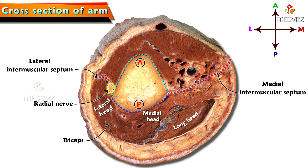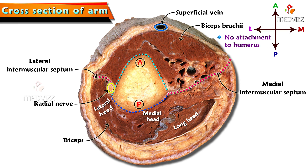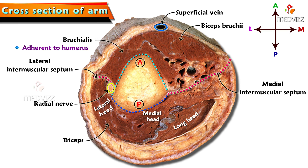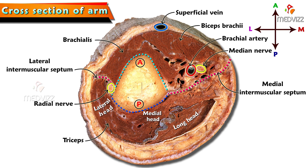In the anterior compartment, here is the superficial vein running anteriorly. We can see the biceps brachii, which is most superficial and has no attachment with the humerus. And this muscle adherent to the humerus is brachialis. The nerve here along with the brachial artery is the median nerve, and these are the brachial arteries along with its veins. Here we can see the ulnar nerve posterior to the intermuscular septum.